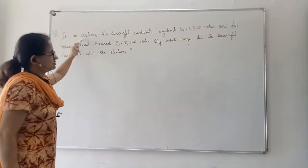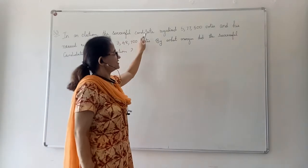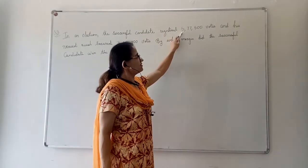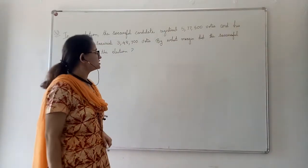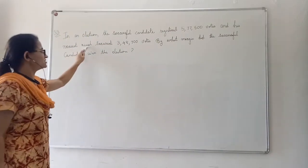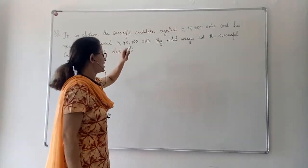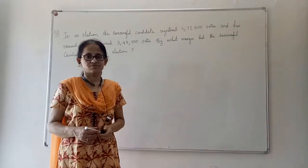In an election, the successful candidate registered 5,77,500 votes and his nearest rival secured 3,48,700 votes.